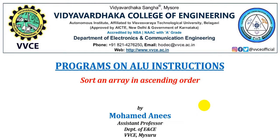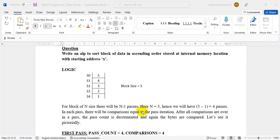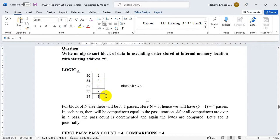In this video tutorial we shall see the logic as well as the program to sort an array of unsigned numbers in ascending order. Once you are aware of this logic, you need to change only one instruction to sort the array in descending order. I have an array stored from memory location 30H, and this array has to be sorted in ascending order, so the expected result should be 1, 2, 3, 4, and 5.